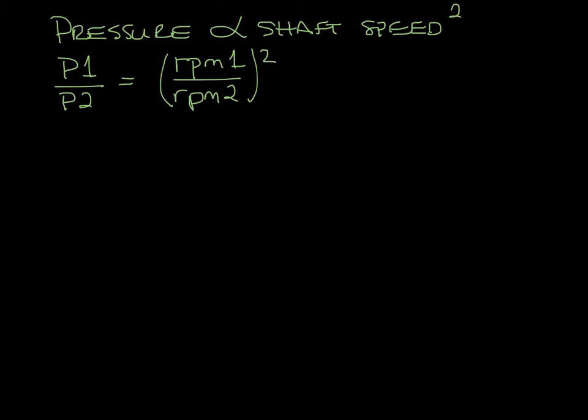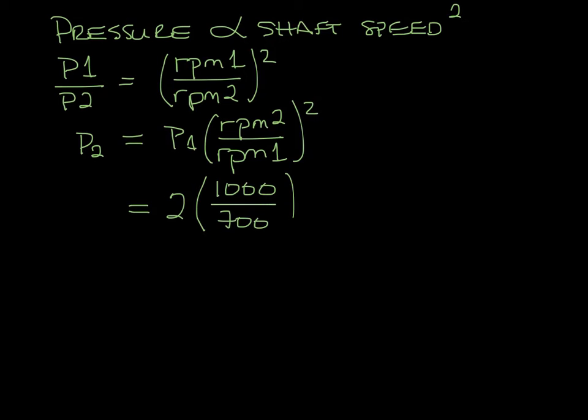So let's say you want to find pressure 2. Here's the equation for it. Now let's say you're starting with 2 inches of pressure. We're going to use our 1,700 from earlier. And that comes out to 4.08 inches of pressure. So you can see that by the RPM going up from 700 to 1,000, the pressure increased from 2 inches to over 4 inches.